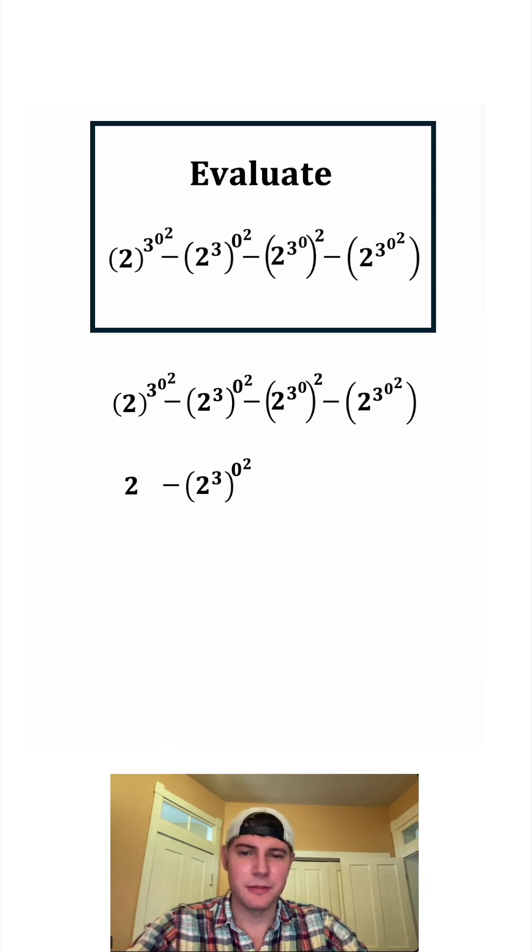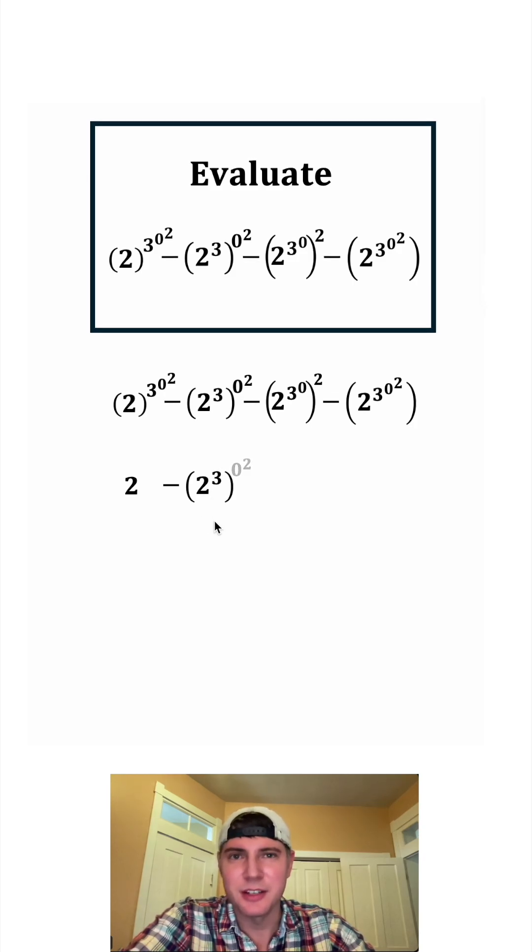Now let's focus on the second term. The major difference here is the location of the parentheses. We need to evaluate inside the parentheses first. Two cubed is equal to eight. And now we can focus on the tower. Zero squared is equal to zero. And now we can do eight to the zero. And anything to the power of zero is one. So this whole second term simplified to one.